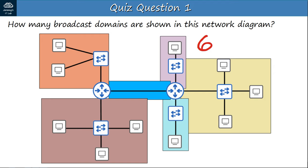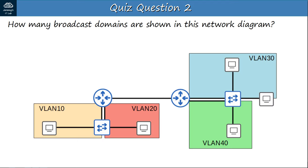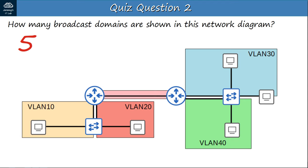Question 2: How many broadcast domains are shown in this network diagram? Take note of the configured VLANs. The answer is 5 broadcast domains — one for each of the configured VLANs, and the connection between the two routers is a broadcast domain as well.